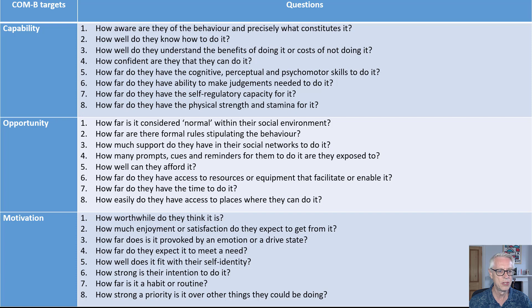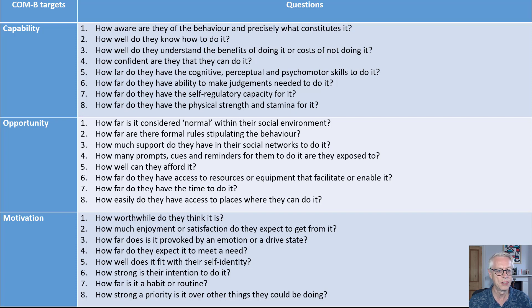When it comes to opportunity, there are a number of questions you can ask. Thinking about social opportunity — the social environment in which we live — how far is the behaviour just considered normal? How normative is it within their family, peer group, and wider society? How far are there formal rules stipulating the behaviour? How much support do they have in their social networks? What kinds of prompts, cues, and reminders are there? Can they afford it? Do they have the time and resources to do it?